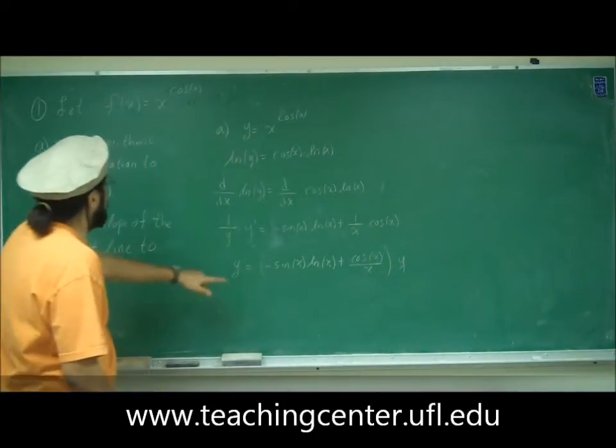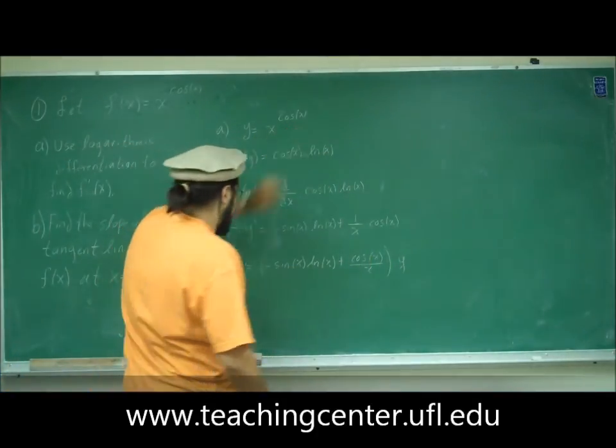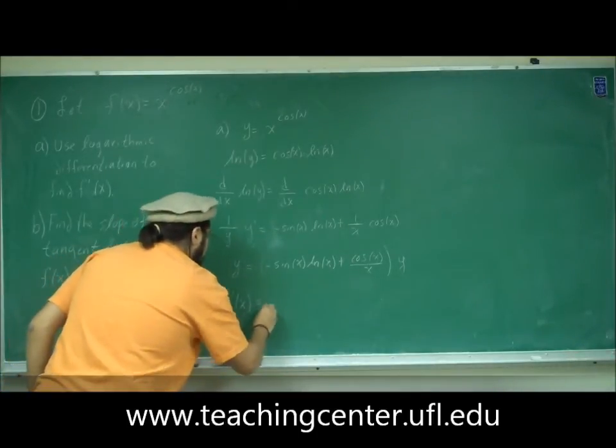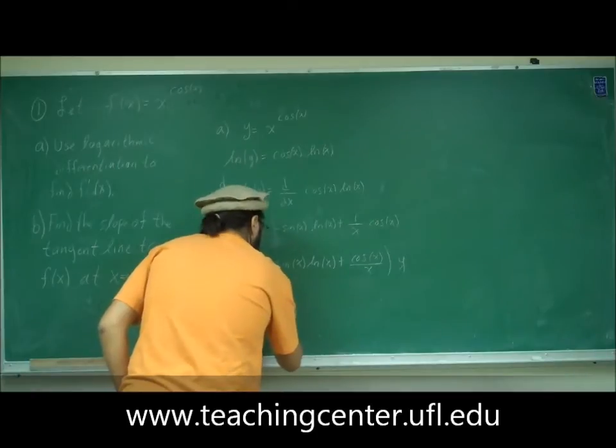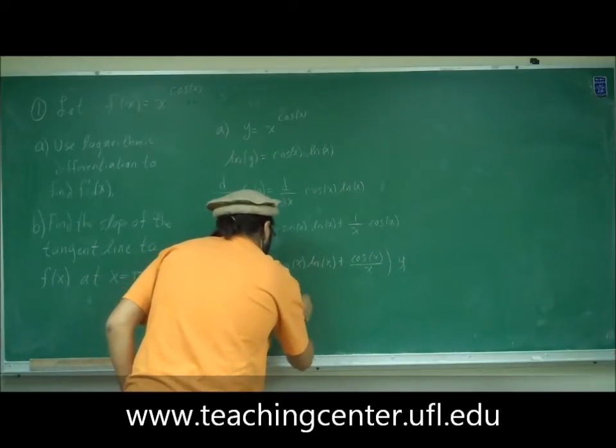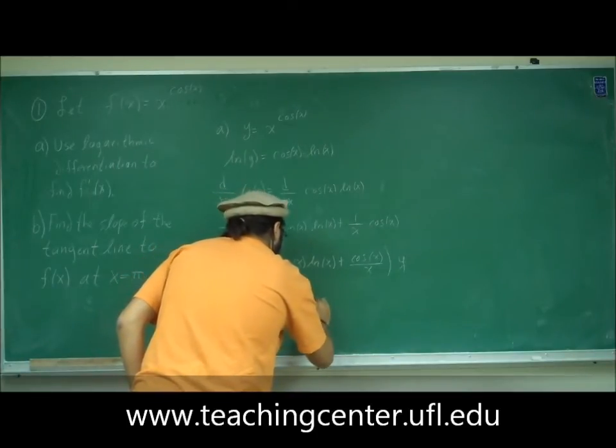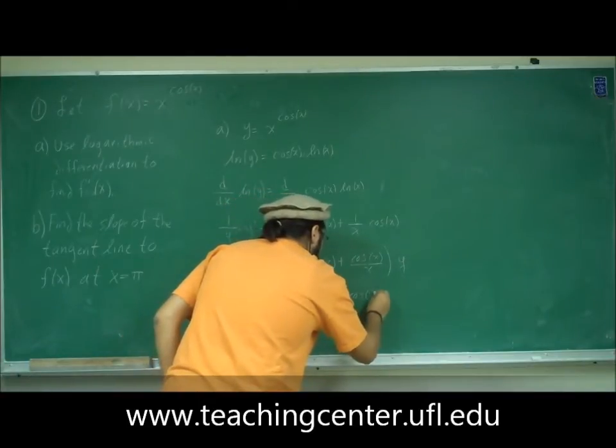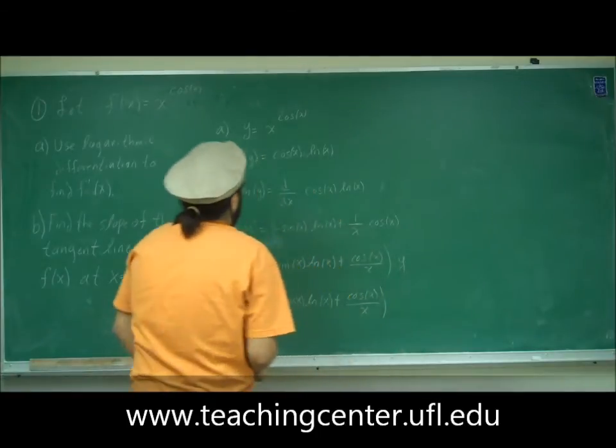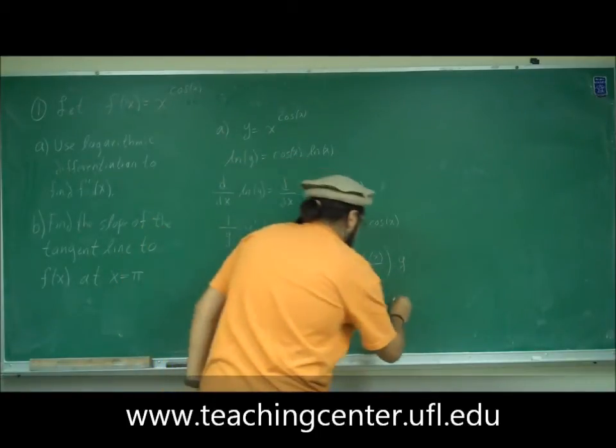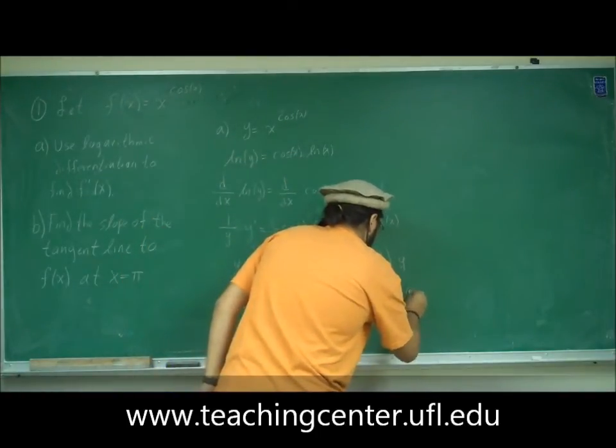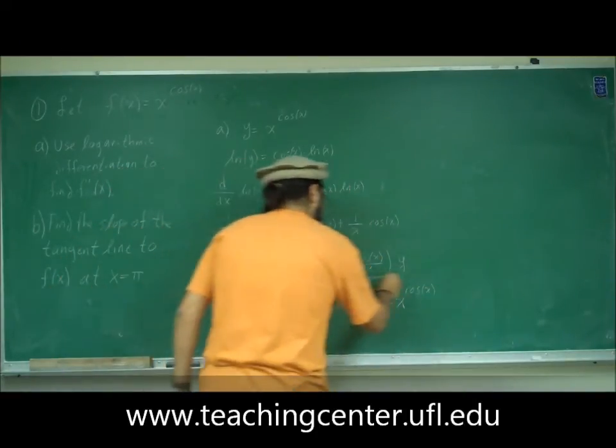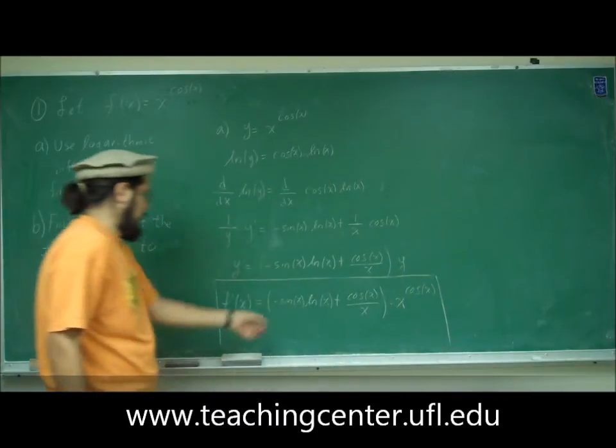We know that y is equal to x to the cosine x. Therefore, f prime of x is equal to minus sine x ln of x plus cosine x over x, times y which is x to the cosine x. So f prime is all that.